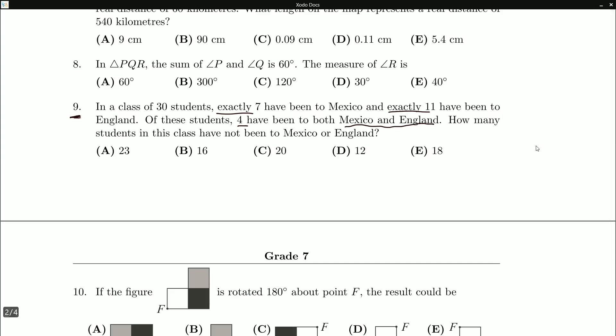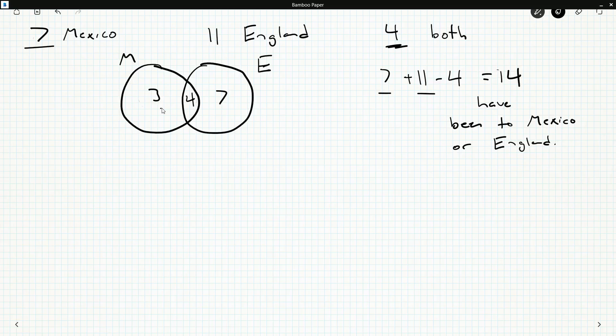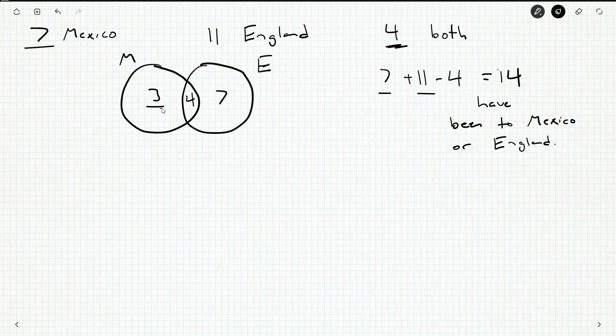Now remember, what are we being asked? How many students have not been to Mexico or England? Well, I know how many have been to Mexico or England, 14. And I know that there's 30 students in total. By the way, another way we can see 14 is the three plus the four plus the seven here is 14, if you're a Venn diagram sort of person, but you don't have to be. But the point is 14 have been to Mexico or England. So the other students, the others out of the 30, so 30 minus 14 is 16, have not been to Mexico or England. And that's the number we're looking for, 16.